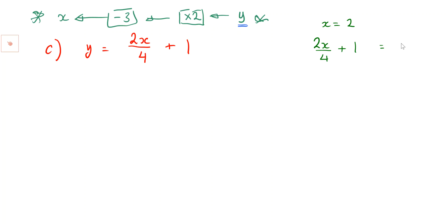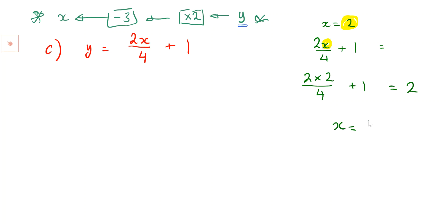Remember what we do with this: it means two x's. So if I ask what does this equal when x is 2, instead of x put a 2. So this would mean 2 times 2 times 2, then divide by 4, then add 1, which gives 4 divided by 4 is 1, plus 1 equals 2.